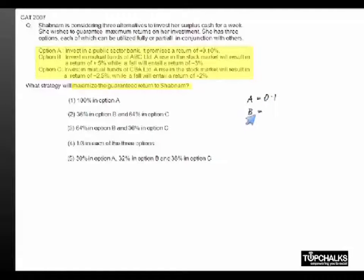Option B gives you, in the event of stock market rising, a plus 5% and in the event of the stock market dropping, a negative return of 3%. Similarly, option C in the event of stock market rising gives you minus 2.5% and in the event of it dropping you get a plus 2%.